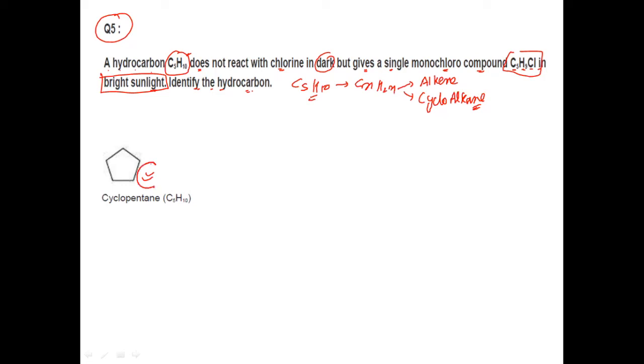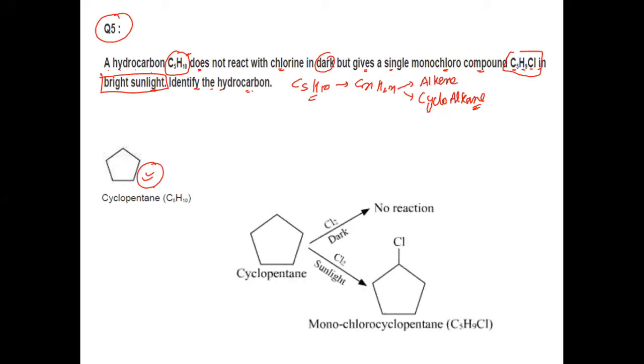Cyclopentane when it reacts with Cl2 gives monochloro cyclopentane, simply chlorocyclopentane. Clear? But in dark chlorination there is no reaction. That's the point.